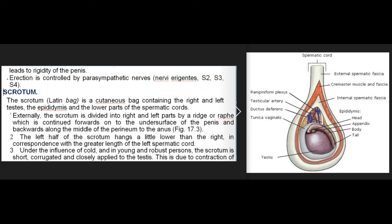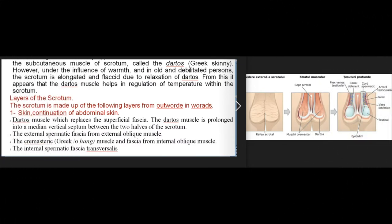Scrotum: The scrotum (Latin: bag) is a cutaneous bag containing the right and left testes, the epididymis, and the lower parts of the spermatic cords. Externally, it is divided into right and left parts by a ridge or raphe, which continues forwards onto the undersurface of the penis and backwards along the middle of the perineum to the anus. The left half hangs a little lower than the right, in correspondence with the greater length of the left spermatic cord. Under the influence of cold, and in young and robust persons, the scrotum is short, corrugated, and closely applied to the testes due to contraction of the dartos muscle. Under the influence of warmth, and in old and debilitated persons, the scrotum is elongated and flaccid, suggesting that the dartos muscle helps in regulation of temperature within the scrotum.